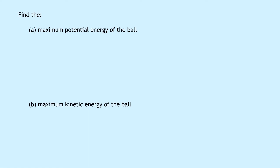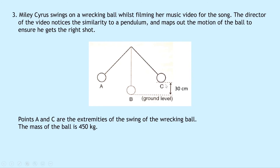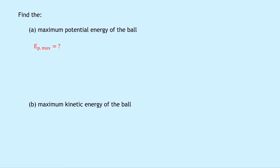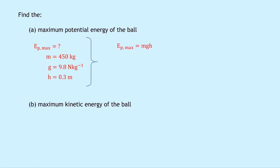Part A asks us to find the maximum potential energy of the ball. This occurs at the extremities of the swing, points A or C, when the ball is 30 centimeters above ground level. We know the mass is 450 kilograms, g is 9.8 newtons per kilogram, and h is 0.3 meters. Using EP max equals mgh, we get 450 times 9.8 times 0.3, which gives an answer of 1,323 joules.